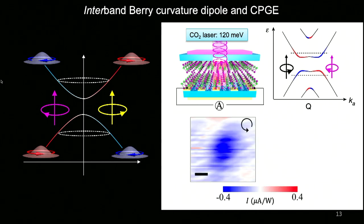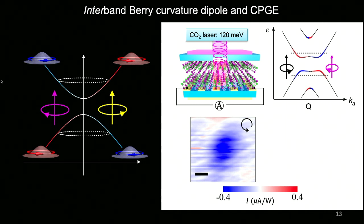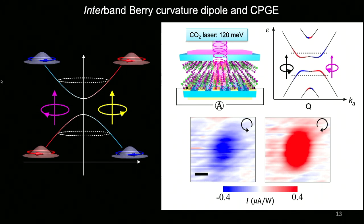We chose to use a CO₂ laser producing photon energy of about 120 meV; this relatively small energy allows us to access states with large Berry curvatures. Here is an example of a 2D photocurrent map: the photocurrent signal as a function of laser position shows a uniform blue response across the sample area. When we flip the handedness of the light, we see a red response that is also quite uniform across the sample area.